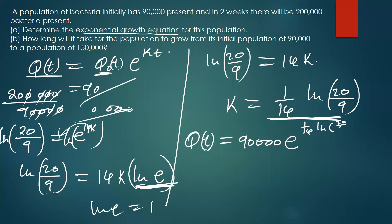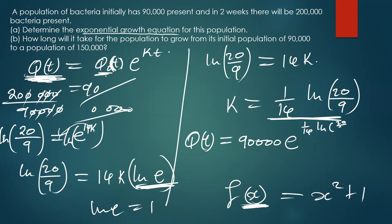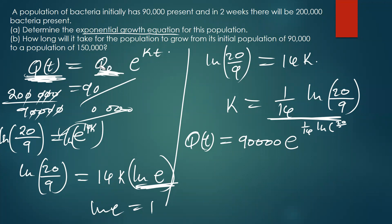When we write q(t), it doesn't mean we substitute a value — it's the same as writing f(x) = x² + 1; you don't put a number in. So q(t) is the same as q-initial. That's why I omitted it initially — a lot of people get confused when they see it. q₀(t) simply represents the initial value of the bacteria present. So this is our exponential growth equation.